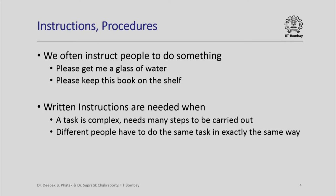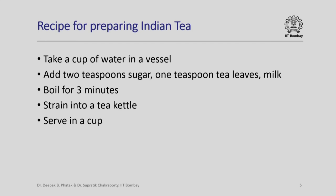There are many examples of written instructions — cookbooks or recipes is one example, and instructions at the workplace is another. Consider the recipe for preparing Indian tea: take a cup of water in a vessel, add two teaspoons sugar, one teaspoon tea leaves and milk, boil the mixture for three minutes, strain into a tea kettle, and serve in a cup. This is how the Kadak Mithi Chai of India is made. For a person not familiar with Indian tea, such a written procedure is very useful because then exactly the same kind of tea could be prepared by different people — one in China, one in Singapore, one in South America — and it will be very similar in nature.